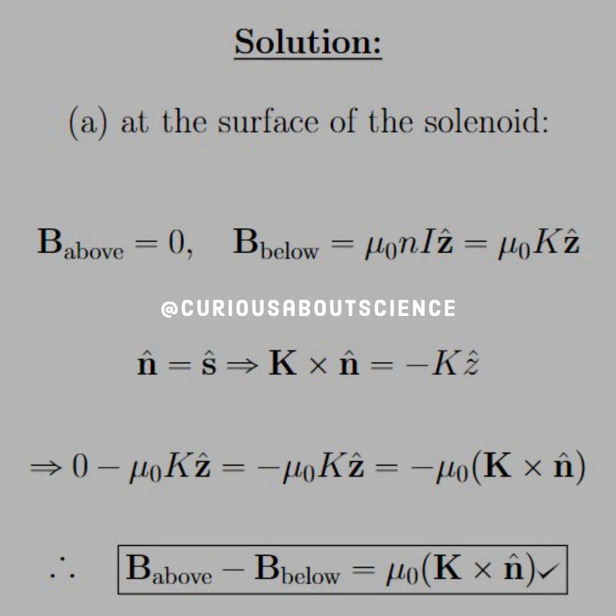With the solenoid, we know that n is s-hat, so K cross n-hat equals negative K z-hat. Follow that through, and we see that when we put this together with boundary condition one, it checks out. You get negative mu naught K on the left and on the right.